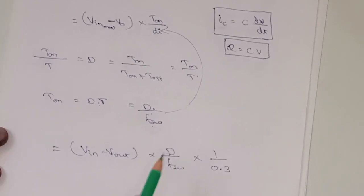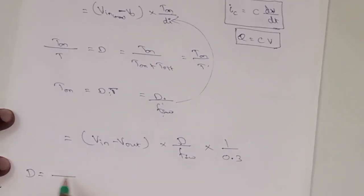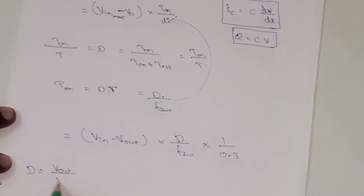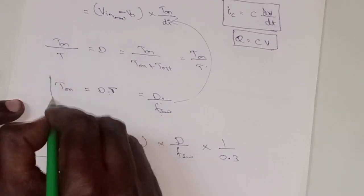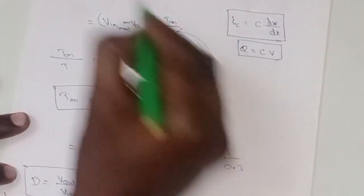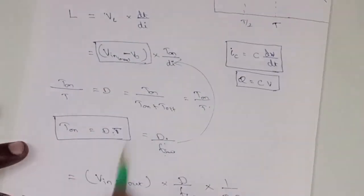Now D also, we come from - so for the buck converter, D is nothing but VOUT divided by VIN. The same way Ton also, this one. And this is the value VIN minus VOUT. We can consider these things.